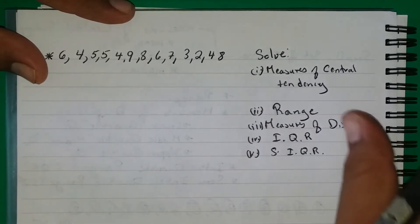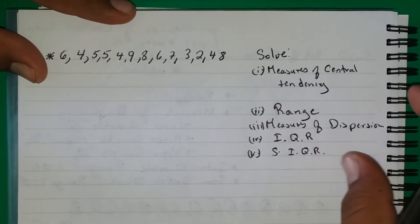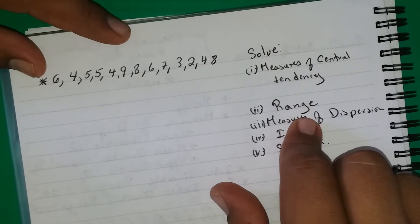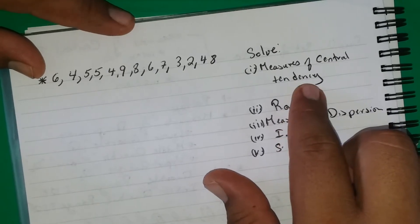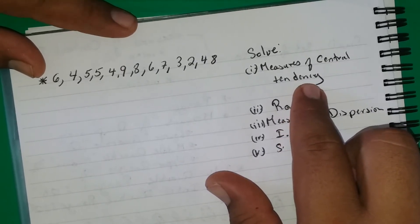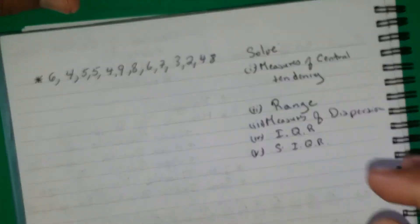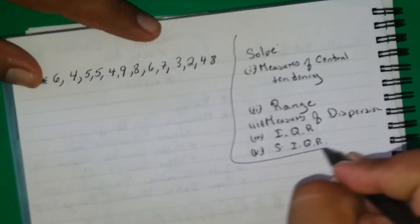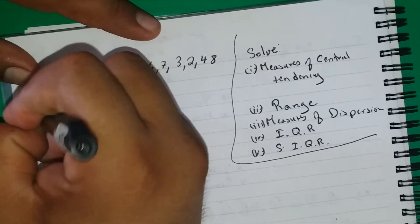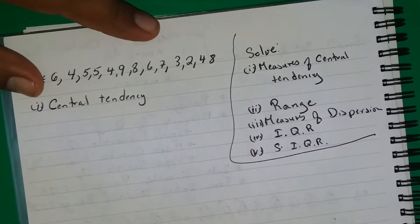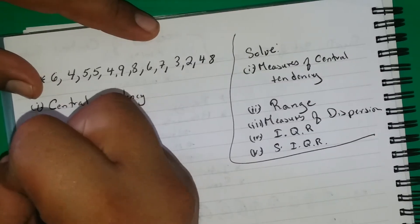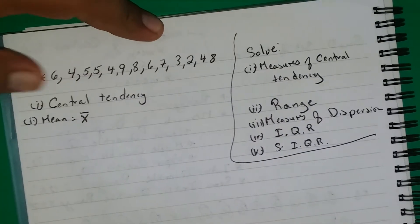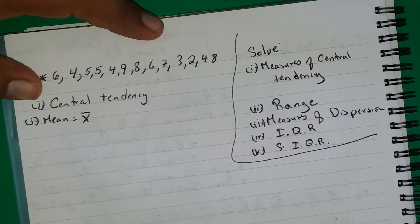If you don't know about these, take a look at the previous videos and you will know what they mean. So the first thing we want to do is find the measures of central tendency. For the mean, we know that the formula is x-bar — that x with a line on top of it means mean.